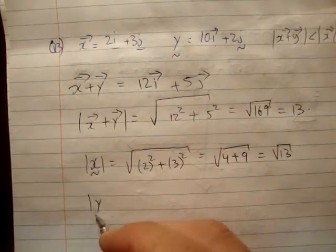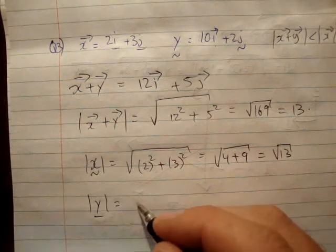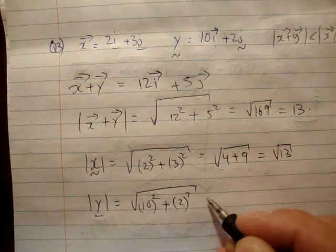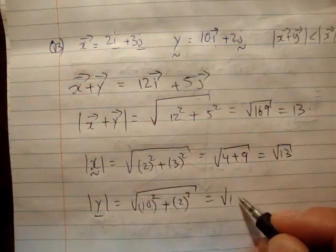Finally, the magnitude of y is equal to the square root of 10 squared plus 2 squared, which is equal to the square root of 104.